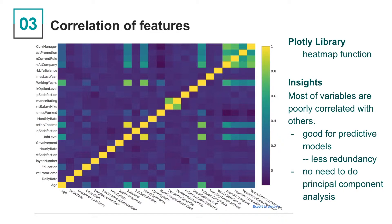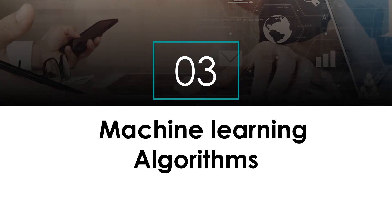In the case that we have a lot of correlated features, one could perhaps apply PCA to reduce the feature space. However, in our case, we may not need to do PCA. Getting more familiar with our dataset, we find all independent variables are significantly associated with attrition. So we start to train our models for the prediction of attrition and attempt to find the most contributing factors.